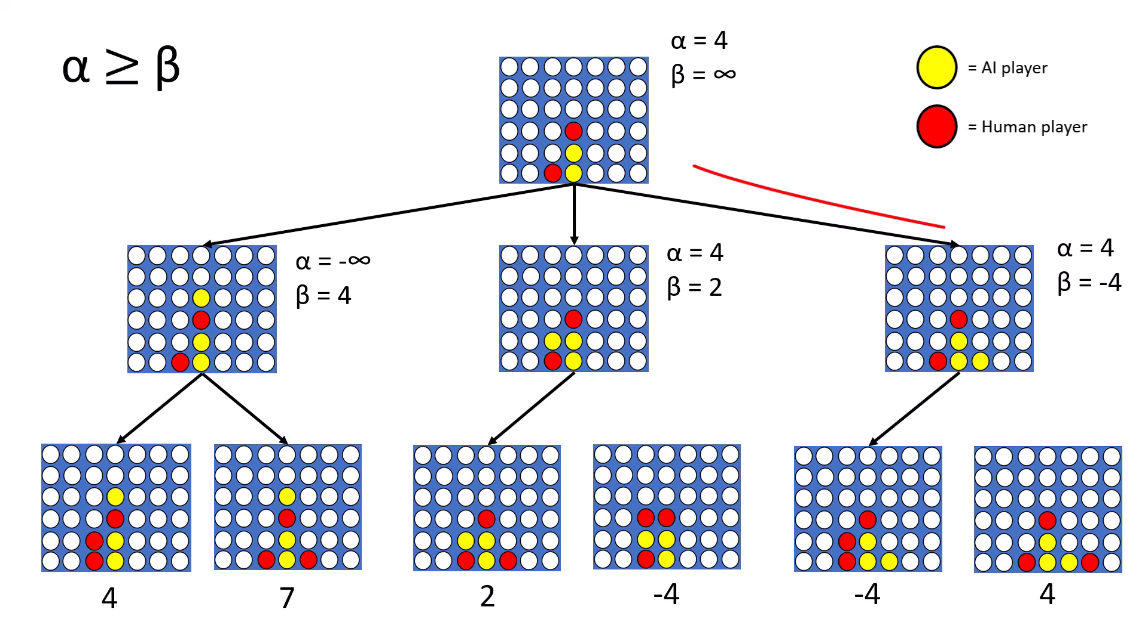We then go back to the top of the tree again. We are back to the AI player or maximizing player's turn, meaning that the alpha value will change. It has a choice between 4 and negative 4, and since 4 is not greater than 4, the alpha value will remain the same.